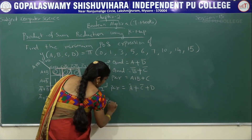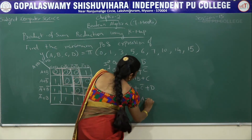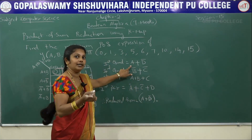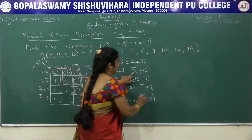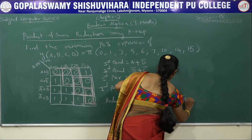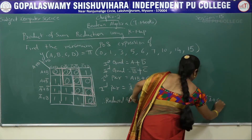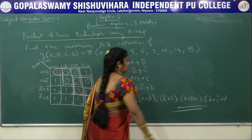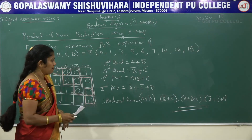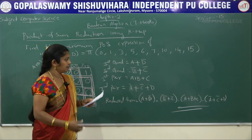Therefore, the reduced POS form equals: (A plus D bar) · (B bar plus C bar) · (A plus B plus C) · (A bar plus C bar plus D). This is the final reduced form for the given K-map with variables A, B, C, D.